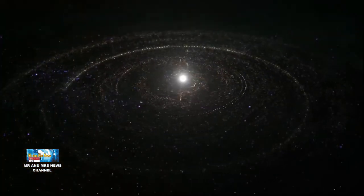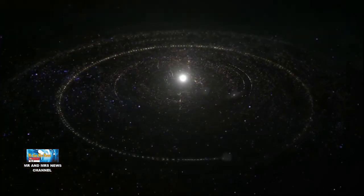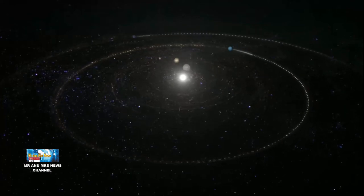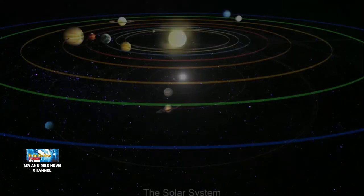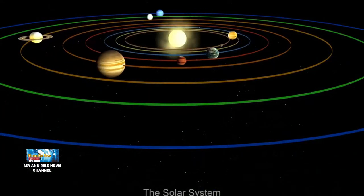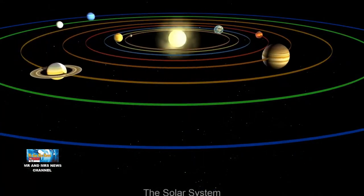Tata surya terdiri dari matahari dan segala sesuatu yang mengorbit di sekitarnya termasuk planet, bulan, asteroid, komet, dan meteoroid. Untuk mengetahui mengapa planet-planet di tata surya memutari matahari,